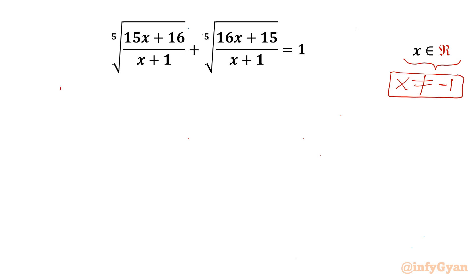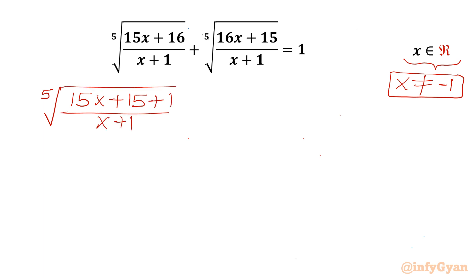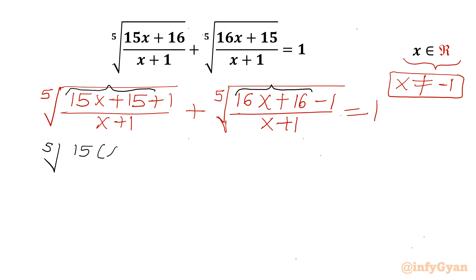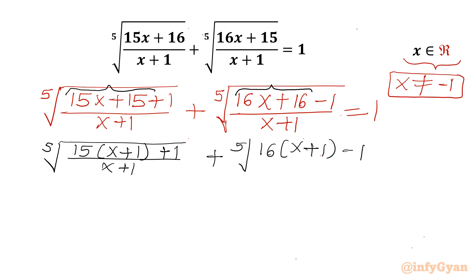Now I will rewrite the equation. In the first radicand, 16 can be written as 15 + 1, and in the second radicand, 15 can be written as 16 − 1. So we get: 5th root of (15x + 15 + 1)/(x+1) plus 5th root of (16x + 16 − 1)/(x+1) equals 1.